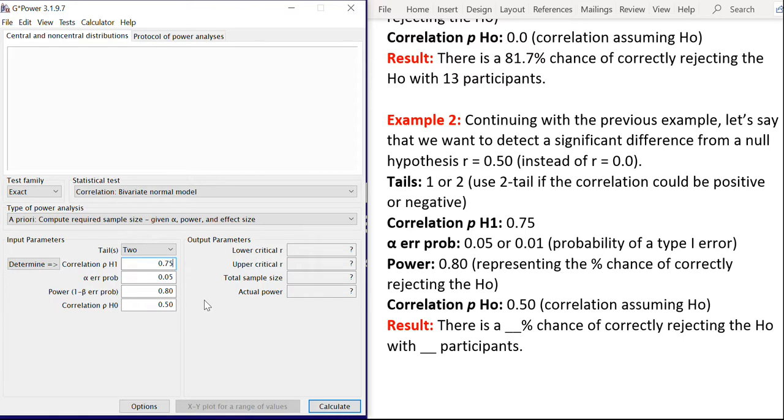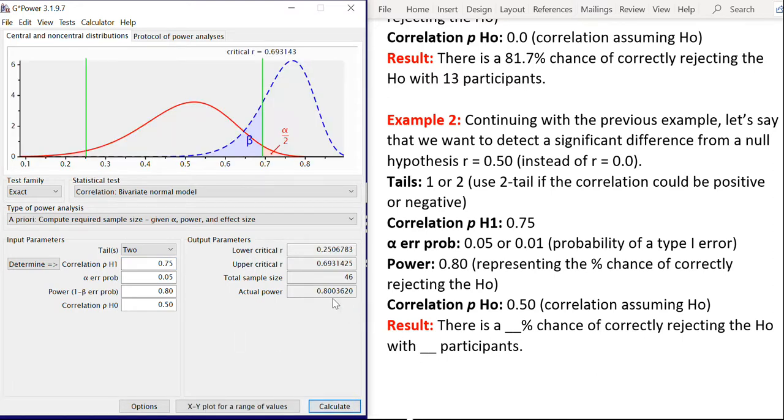So what this is doing is now checking out what power would be and how many participants we would require if we want our expected correlation value of 0.75 to be significantly different from a null value of 0.50. And you can see here that the power would be 80 percent. So there is an 80 percent chance of correctly rejecting the null hypothesis with 46 participants.